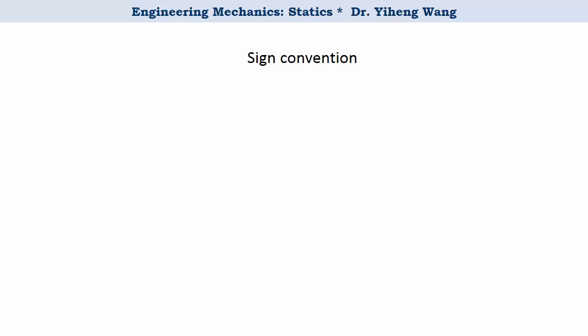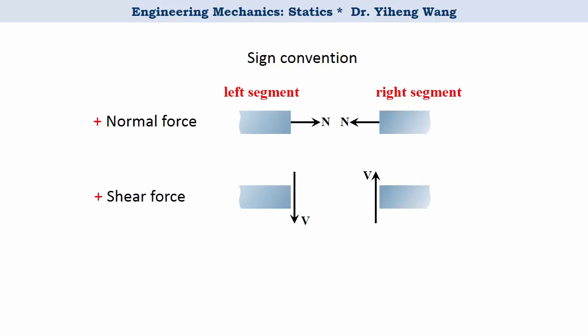According to the sign conventions for a 2D problem, the normal force is considered positive if it's tensile. The shear force is positive if it creates a clockwise rotational effect on the segment. The bending moment is positive if it creates a concave upwards bending effect. I suggest you always draw your unknown internal forces according to the sign convention to avoid confusion.